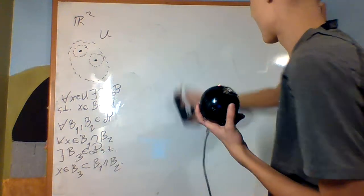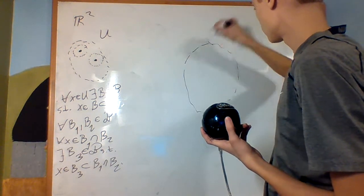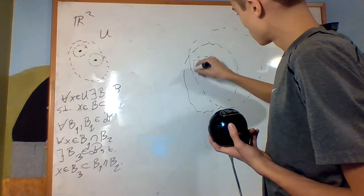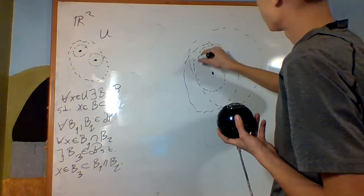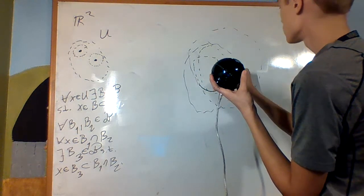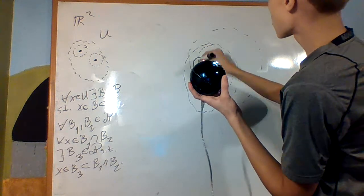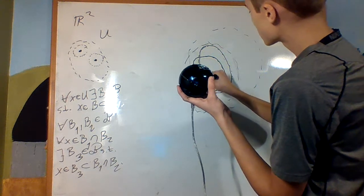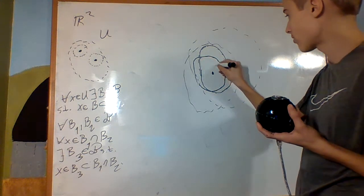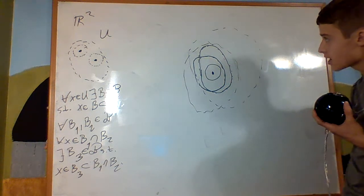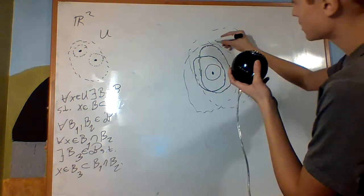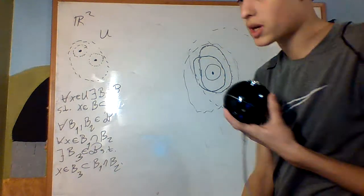I'm going to rework the picture. We're going to have two basis elements — I'm going to make them bold — so I have this basis element and also this basis element. These don't contain their edges, intuitively. What it's saying is that inside of both of these basis elements, I should find another basis element, so that it is inside of both of these, and the intersection of both is contained inside of the full intersection.